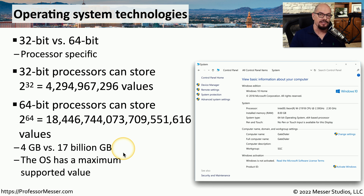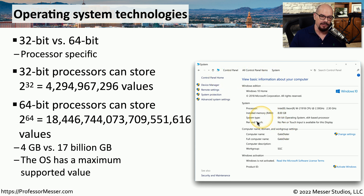If you want to see the system type in your Windows system, you can go to the Control Panel under the system settings, and it will tell you the system type. In this example, I'm using a 64-bit operating system with an x64-based processor.